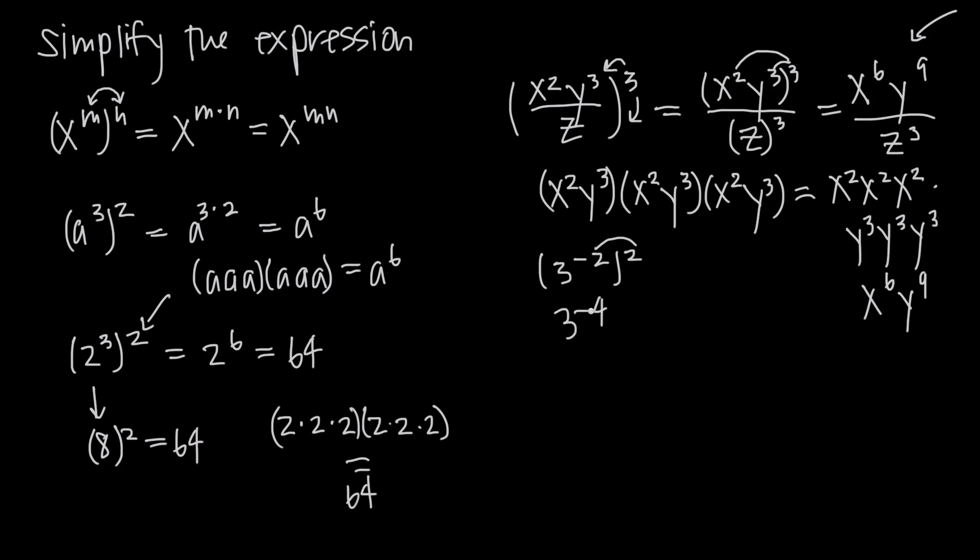When we have a negative exponent, we can change it to a positive by moving this whole value to the denominator. So when we do that, we get 1 over 3 to the positive 4, and then 3 to the 4th is 81. Remember, 3 times 3 is 9, times 3 is 27, times 3 is 81, so we get 1 over 81.